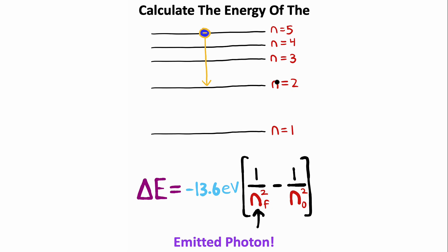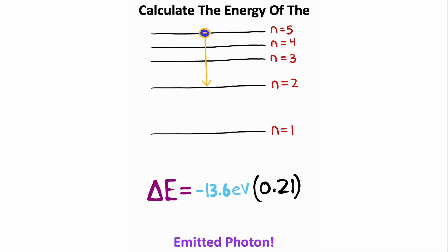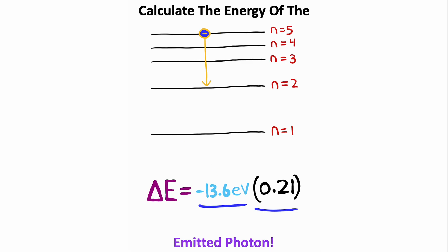We need the final energy level, which this electron drops to energy level 2, and we need the initial energy level, which is 5. So we have 1 over 2 squared minus 1 over 5 squared, which on a calculator comes out to 0.21 as a decimal. Now you can take 0.21 and multiply it by negative 13.6 electron volts. And that should give you an energy of negative 2.856 electron volts, which is the answer to this problem.